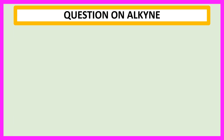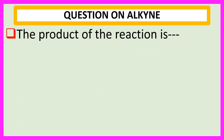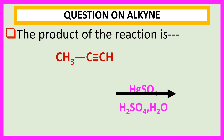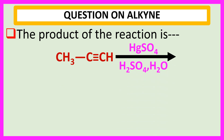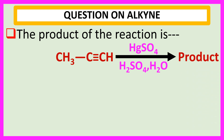Welcome everyone. Question on alkyne. The product of the reaction is when propyne reacts with HgSO4, H2SO4, and H2O. The product choices are A.